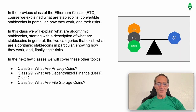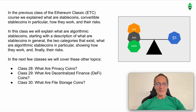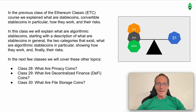In the previous class of the Ethereum Classic ETC course, we explained what are stablecoins — convertible stablecoins in particular — how they work and their risks. In this class we will explain what are algorithmic stablecoins, starting with a description of what are stablecoins in general, the two categories that exist, what are algorithmic stablecoins in particular, showing how they work, and finally their risks.